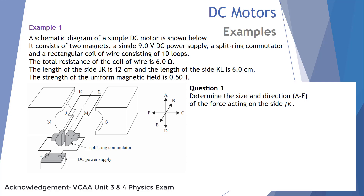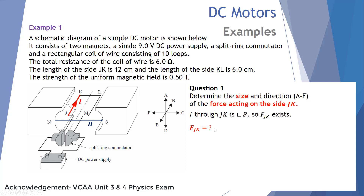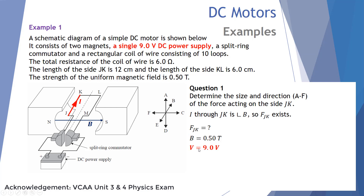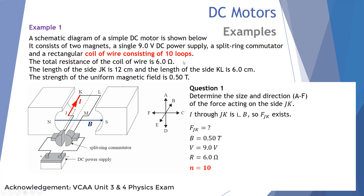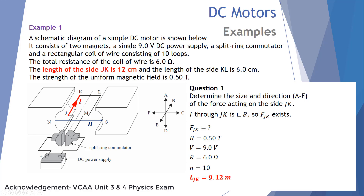Example 1: A simple DC motor has 2 magnets, a single 9V DC power supply, a split ring commutator, and a rectangular coil of 10 loops with a total resistance of 6 ohms. The length of section JK is 12 cm and side KL is 6 cm. The uniform magnetic field strength is 0.5 T. Question 1: Determine the size and direction of the force on side JK. Current runs from the positive terminal through the brush and commutator from J to K, perpendicular to the magnetic field.